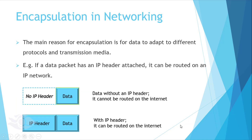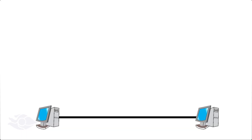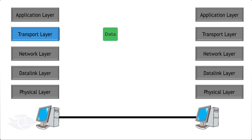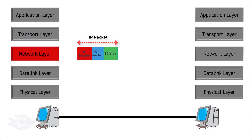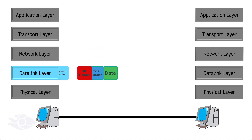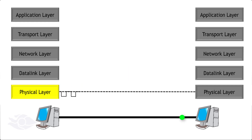The main reason for encapsulation is to make data adapt to different protocols and transmission media. For example, any data to which an IP header is attached is capable of being routed on an IP network. For Ethernet-based networks, application layer data is encapsulated into a TCP segment or UDP datagram at the transport layer. The segment or datagram is encapsulated into an IP packet at the network layer. The packet is encapsulated into an Ethernet frame at the data link layer. Then the frame is encoded as a signal to be transmitted through the physical media.